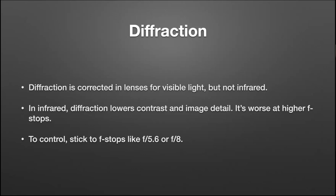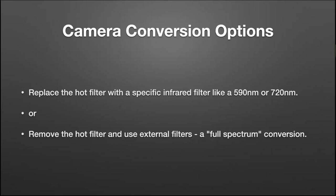Another problem with infrared photography is that lenses are corrected for visible light. The diffraction of infrared, because it's a different wavelength, if not controlled properly — especially if you shoot at around f/16 or f/22 — you will have a lot of contrast and detail loss. So to shoot infrared, you really need to use the middle apertures like f/5.6 or f/8. When doing a camera conversion, you have two options: replace the hot filter with an infrared filter like 590 or 720 nanometers, or just remove the hot filter and use external filters. I did the latter — it's called a full spectrum conversion.